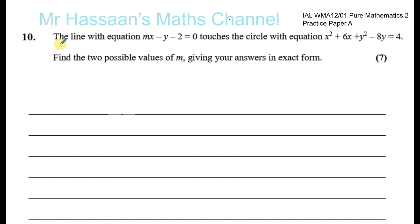Here we have the line with equation mx minus y minus 2 equals 0. So that's a straight line. m is a constant, it should really tell us that. It touches the circle with the equation x squared plus 6x plus y squared minus 8y equals 4. Find the two possible values of m, giving your answers in exact form.